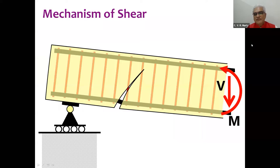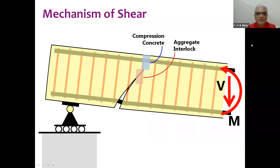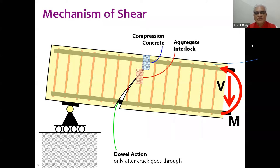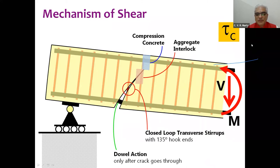Classically, for shear behavior of beams, concrete in compression, aggregate interlock, and the presence of longitudinal steel at the bottom all contribute to the design shear strength of concrete. The dowel action is generated only after the crack goes through. Adding closed-loop transverse stirrups with 135-degree hook ends gives the complete net shear across the cross section, including contributions of both steel and concrete.